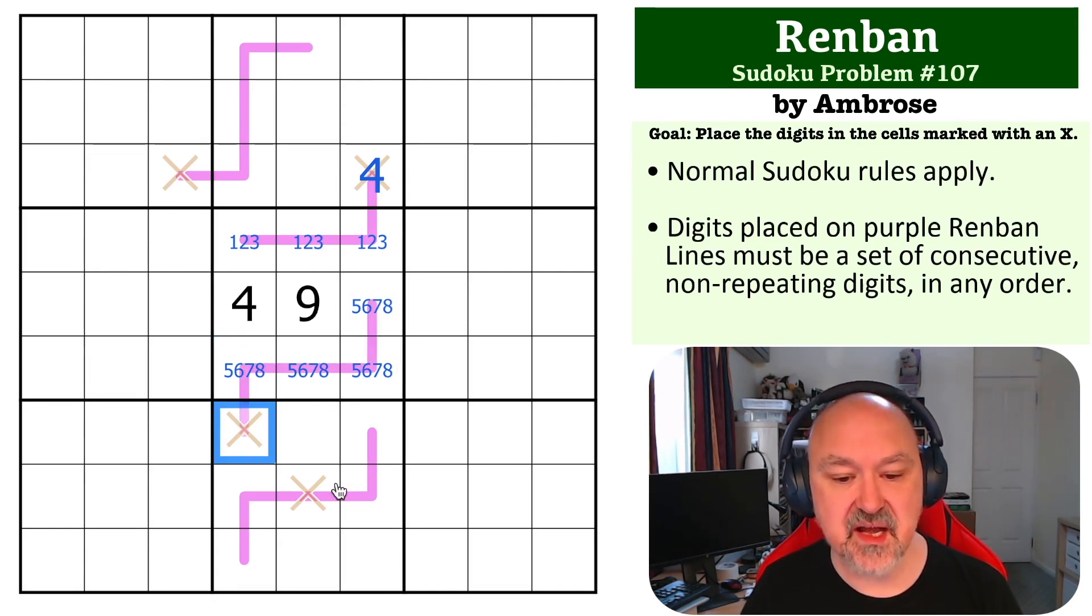So this digit here has to be either at the low end of those consecutive digits or the high end. And it can't be four, five, six, seven, eight, because that cell sees a four. So this has to be five, six, seven, eight, nine.